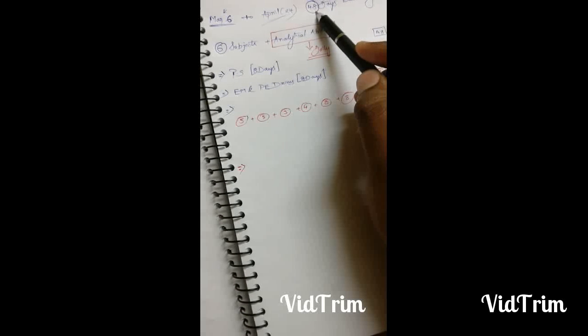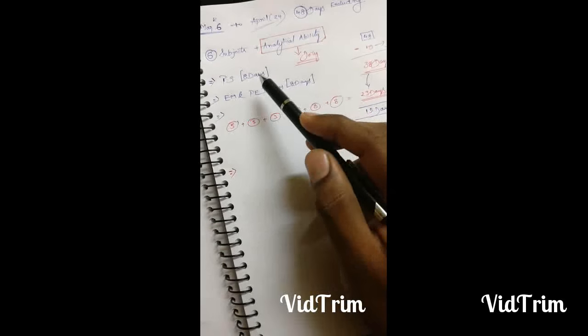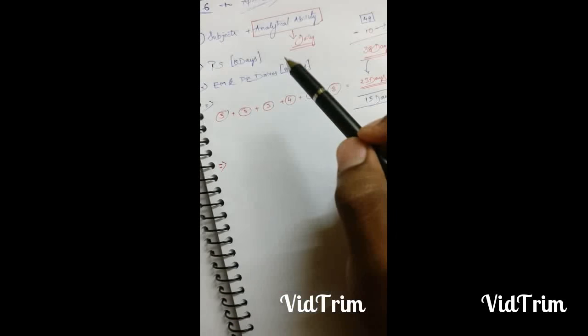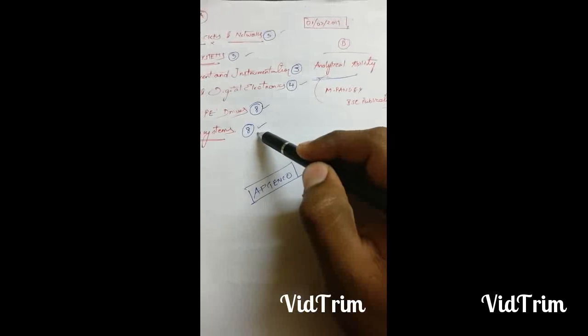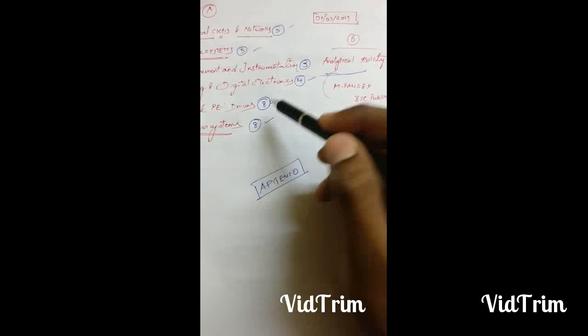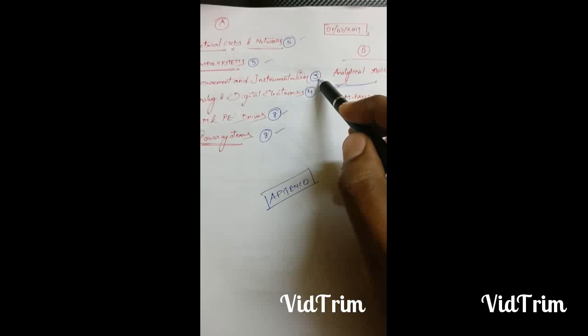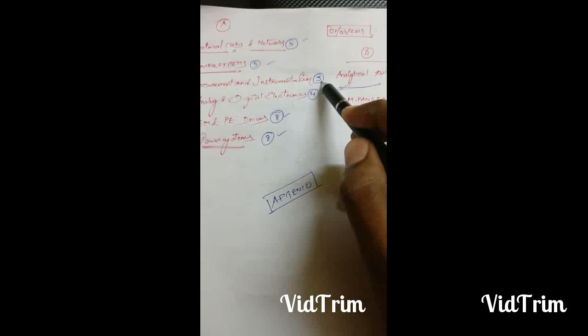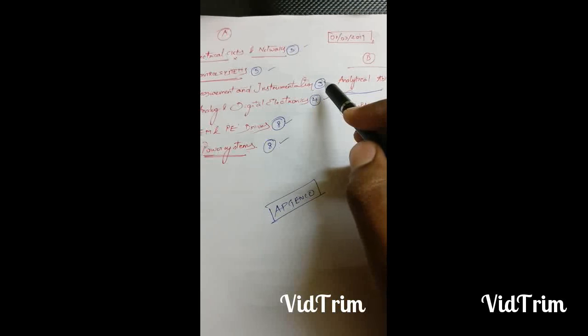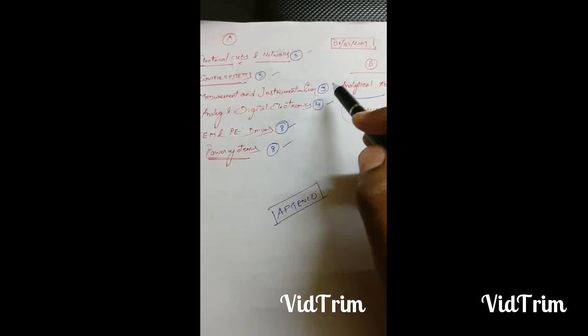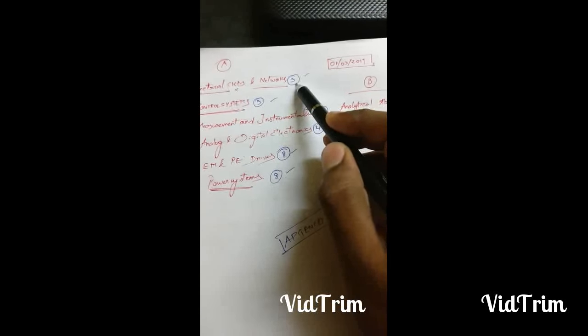Generally people prepare for eight days per subject, but according to the length and difficulty of each subject, I have divided subjects as per their difficulty level. Power systems should be given eight days, electrical machines and power systems eight days, analog and digital four days, measurement and instrumentation three days. Three decent days is enough because it's nothing but applying electrical circuits KCL, KVL and some basic formulas. Control systems five days and electrical circuits and networks five days.